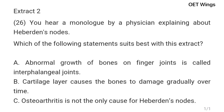Mostly, Heberden's nodes develop on the joints nearest to the fingertips, causing the fingers to appear crooked. They only develop in osteoarthritis patients. Each joint in our body has a layer of cartilage to protect the bones. Osteoarthritis causes the cartilage layer to degrade gradually, allowing the bones and joints to contact directly with each other. Over time, the bones get damaged from scraping together. Our body reacts to this damage by developing new bones known as nodes. Heberden's nodes are one such bone formation on the fingers of patients with severe osteoarthritis.